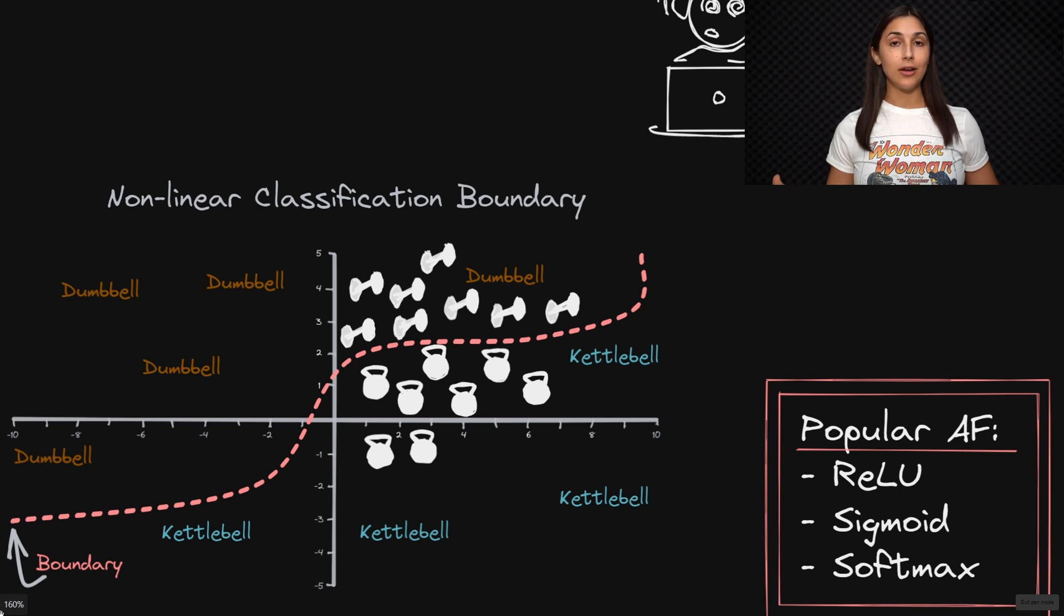By including nonlinear activation functions in a neural network, we allow the network to model an arbitrarily complex function.